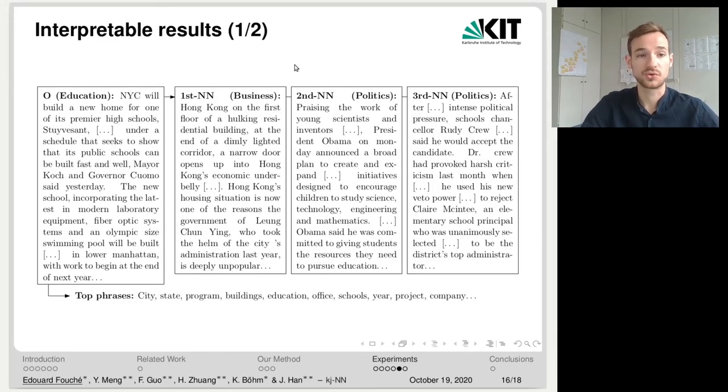A nice feature of our approach is that it provides interpretable results. Here we show a type O outlier from the New York Times dataset. And here are the first, second, and third nearest neighbors of this document. It is interesting to see that they all somewhat relate to each other because they all deal with building construction projects or political decisions in education or even both. Also, when looking at the top phrases of this document, that is to say the phrases which are the most similar to the document in the embedding space, we can see that they are highly informative about the content of this article and also that the actual label, education, shows up in position 5.